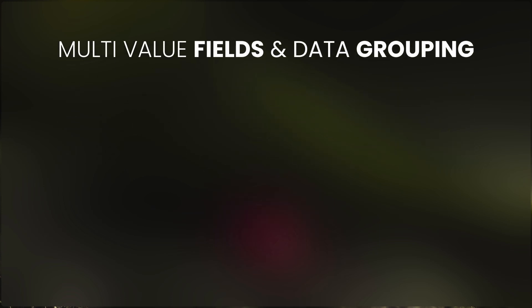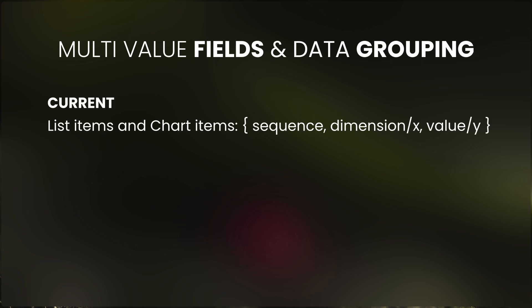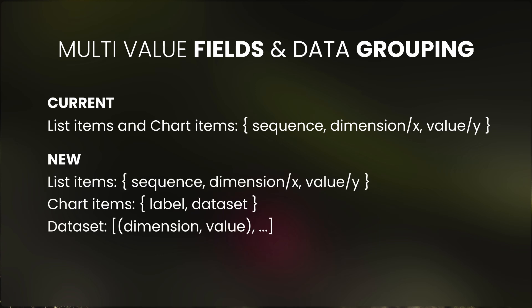For the multiple value fields and data grouping features, first we need to look at the data structure. The current version uses a sequence X and Y structure for both list items and chart items. Since we're not changing anything for list items, we'll still use this format only for list items. For chart items, I use another structure based on the chart.js data structure. Each combination of a dimension field and a value field is treated as one dataset, and each data group of a dimension field and a value field is also treated as one dataset. This way, the front-end code is the same for both multiple value fields and data grouping.